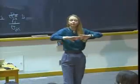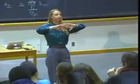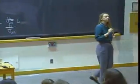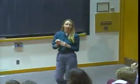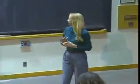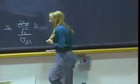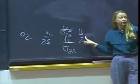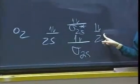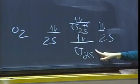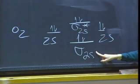We saw last time that when these atomic wave functions constructively interfered, the result was a molecular wave function that was a bonding wave function, and consequently had a bonding state. For example, in the case of oxygen, we have the 2s wave functions on each of the isolated oxygen atoms. When they overlap, they can constructively interfere to form a sigma 2s bonding wave function and, consequently, a sigma 2s bonding state.